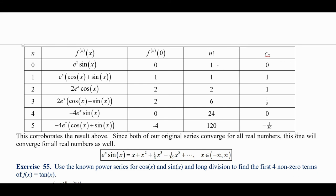Now we take these. Here's n factorial: 0 factorial, 1 factorial, 2 factorial, 3 factorial, 4 factorial, 5 factorial. And we divide the f, the nth derivative, divided by n factorial. 0 divided by 1 is 0. 1 divided by 1 is 1. 2 divided by 2 is 1. 2 divided by 6 is 1/3. 0 divided by 24 is 0. -4 divided by 120 is -1/30.